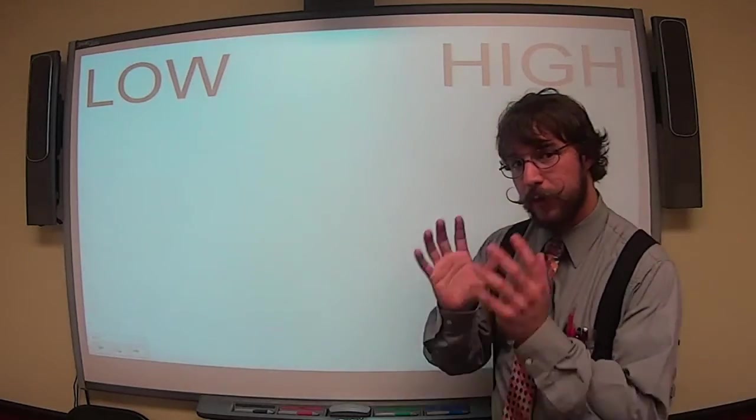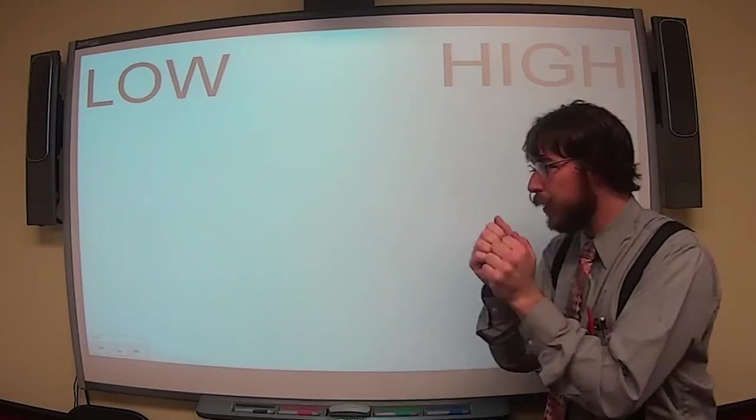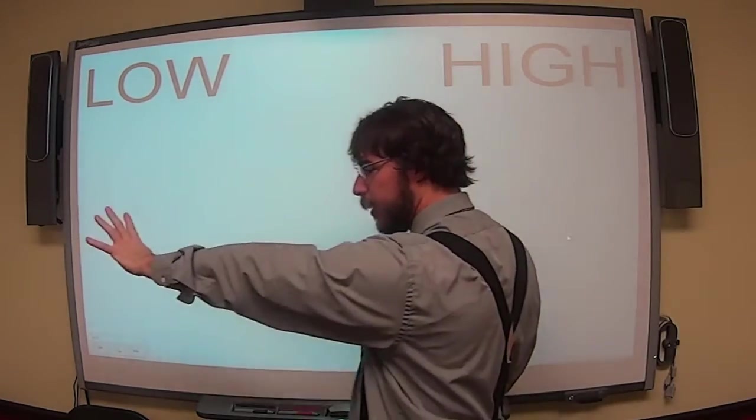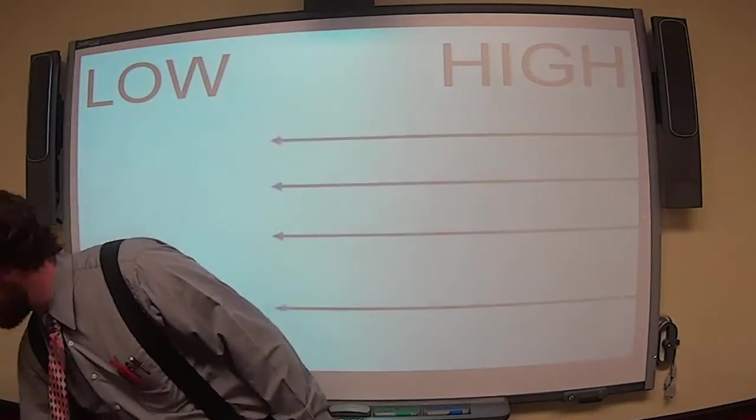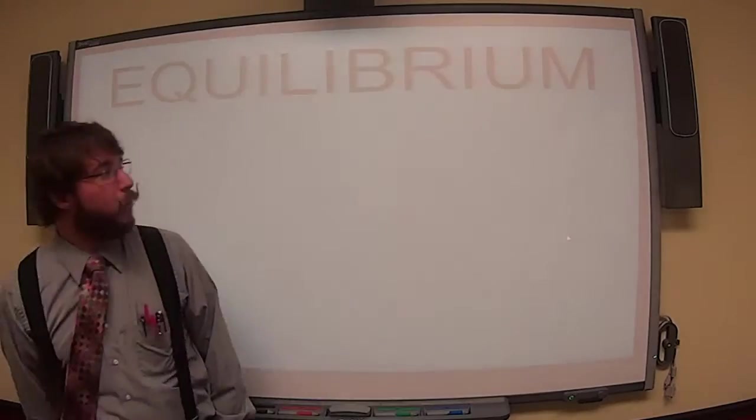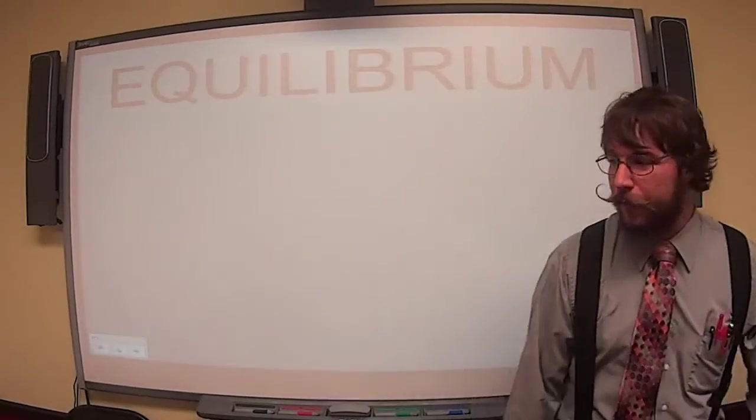So what will happen is these molecules tend to move because they're just randomly bumping into each other over here. They're going to tend to move from the area of high concentration and randomly spread to the area of lower concentration. Like a dot. This movement will result in equilibrium where now the molecules are evenly spread everywhere.